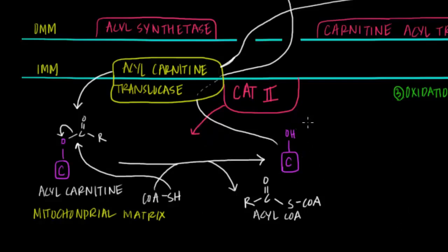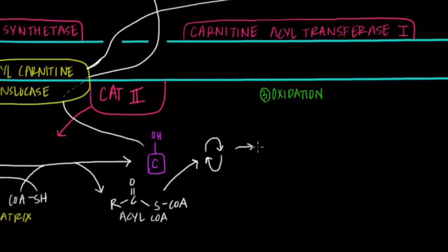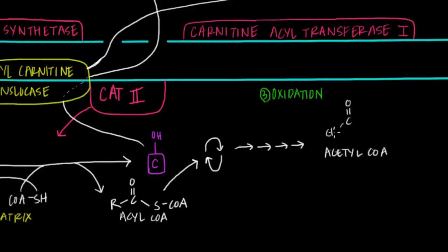Now that we've gotten our fatty acid into the mitochondrial matrix in the form of acyl-CoA, what happens next? Using the enzymes found in the mitochondrial matrix, this molecule undergoes a cycle of repeating steps — each cycle consists of four main steps. At the end of each cycle we produce one molecule of acetyl-CoA, which is a two-carbon structure with an acyl group attached to coenzyme A. We also produce an acyl-CoA chain that is now two carbons shorter than before, because those two carbons were used to produce this acetyl-CoA molecule.